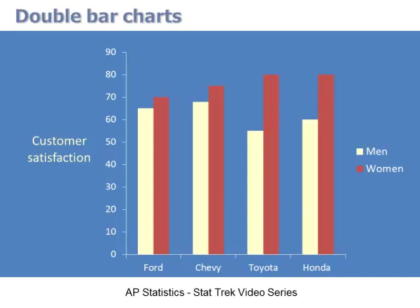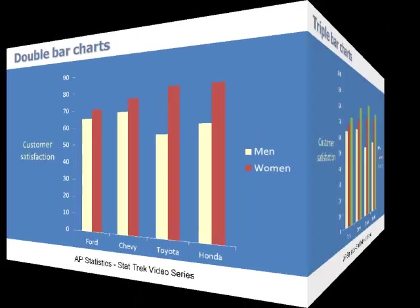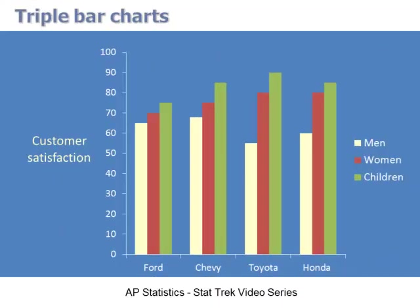The notion of a double bar chart can be extended to include any number of groups. For example, here we show a triple bar chart that compares satisfaction ratings from men, women, and children.